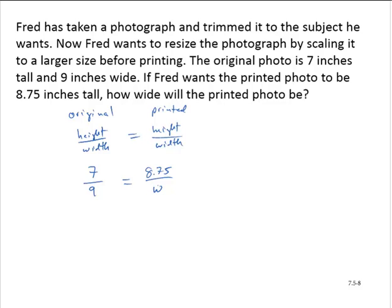All right, so then let us cross multiply to solve the proportion. So we have 7 times w is equal to 9 times 8.75.